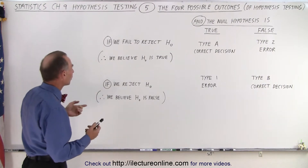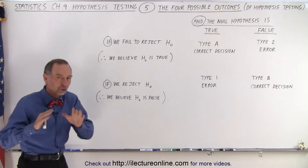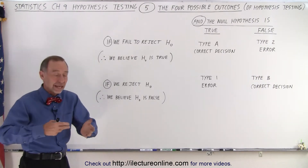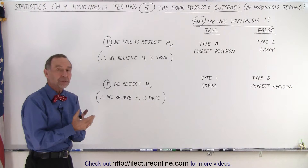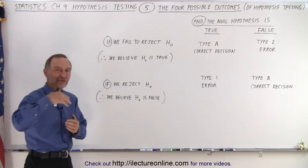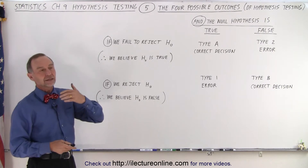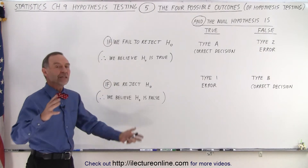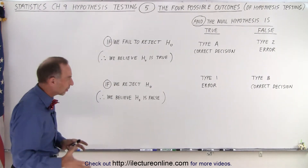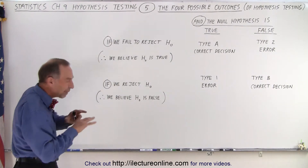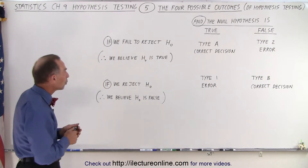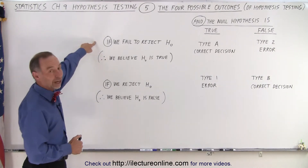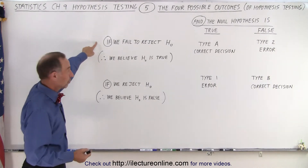First of all, we can either — and this is of course based on the information and data that we gather when we take a sample of the population, and we find the mean, and we find the deviation to the mean, and we find the standard deviation, we find the sample size and all that — and based upon that information, we either will fail to reject the null hypothesis.